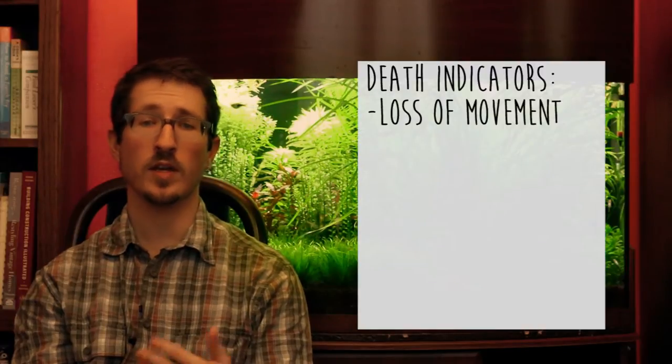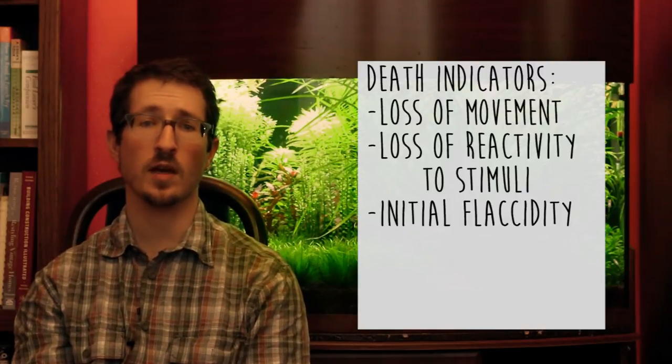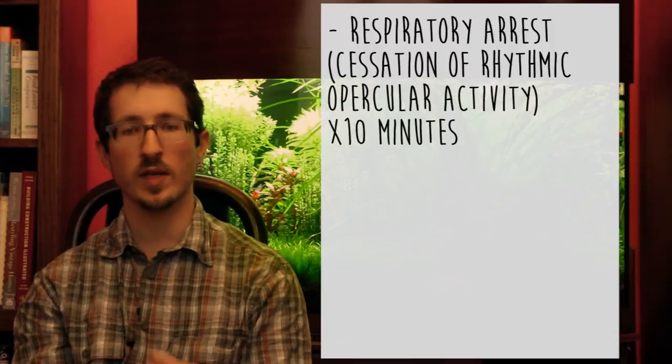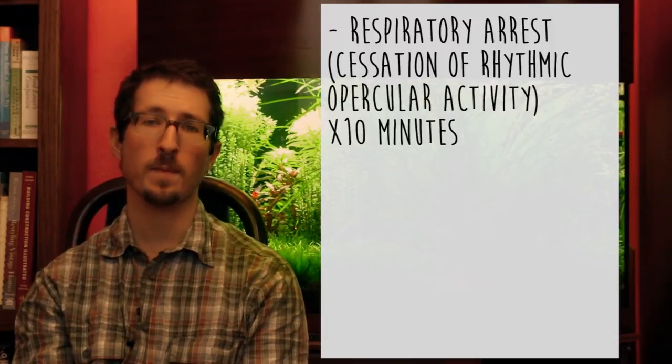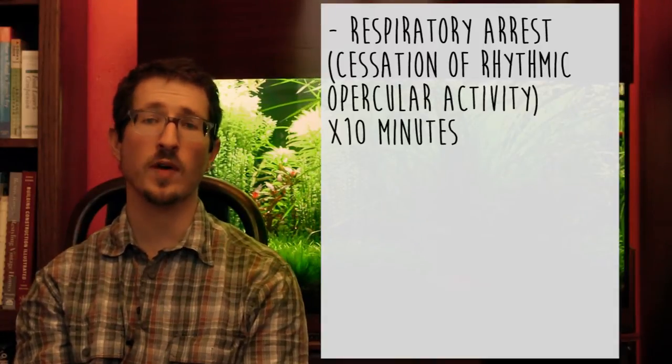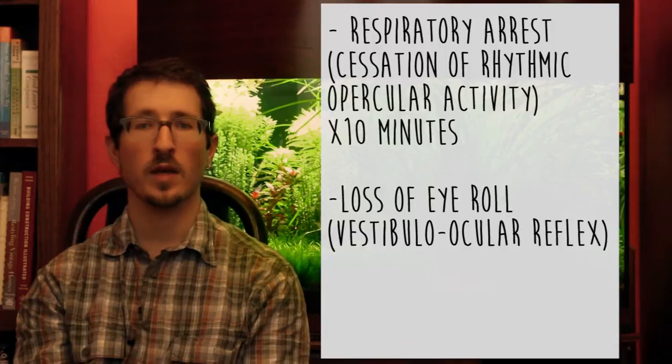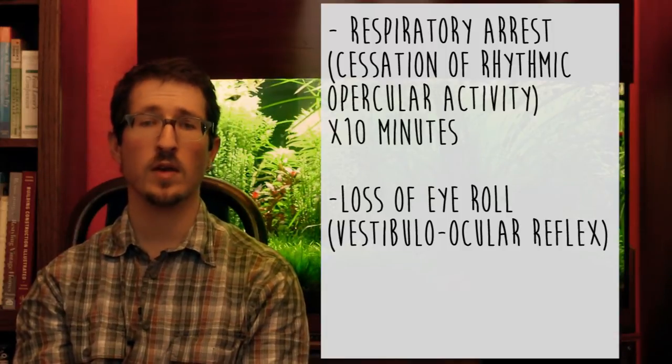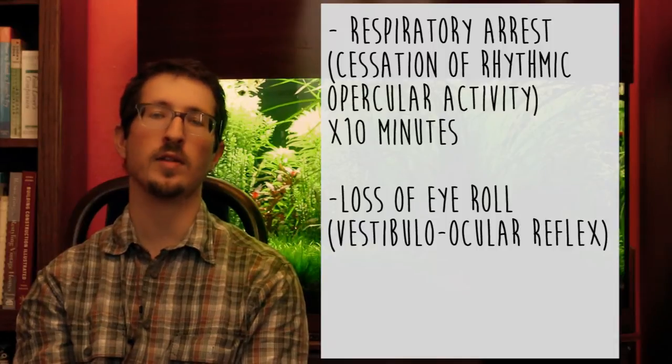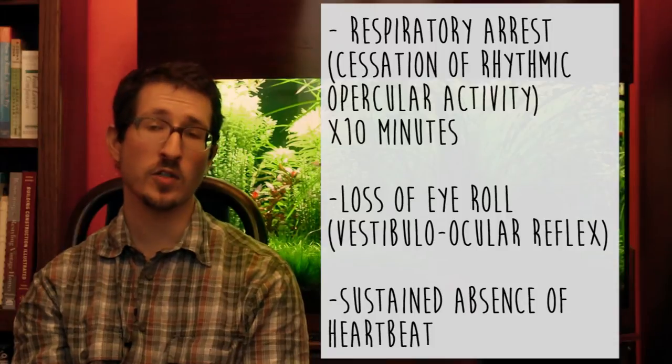Now, because there are thousands of species of fish and aquatic invertebrates and they can all vary greatly in anatomic and physiologic characteristics, there's actually no single reliable indicator of death. However, there are some standard approaches that can be useful. These include the loss of movement, loss of reactivity to any stimulus, and initial flaccidity prior to rigor mortis. Now, more useful indicators for many fish include respiratory arrest, which we can see in terms of the cessation of the rhythmic opercular activity. And we want to observe this for 10 minutes. Also, the loss of eye roll, which is actually a reflex that is the movement of the eye when the fish is rocked from side to side. It's also important to know that the heart can continue to contract even after brain death. So the presence of a heartbeat is actually not a reliable indicator of life, but the sustained absence of a heartbeat is actually a very strong indicator of death.